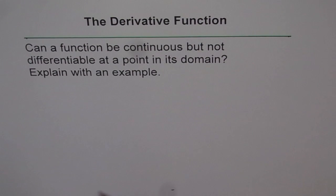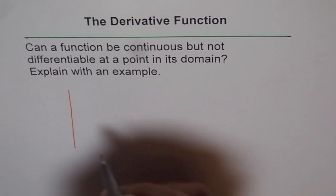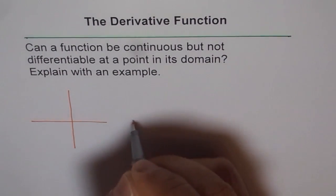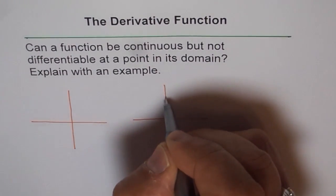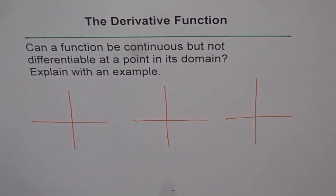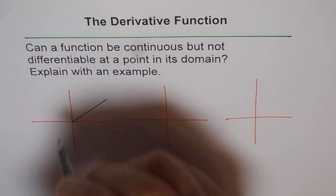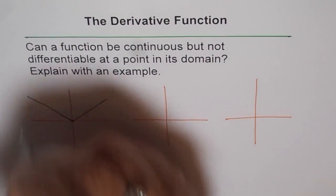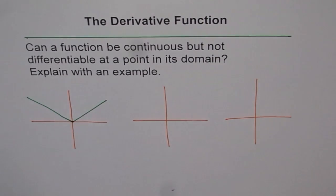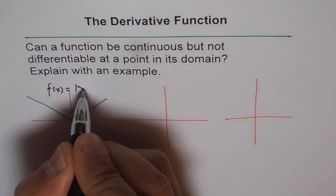Let me give you a few examples where the function is continuous but it may not be differentiable. I'll make a few graphs — let's say three graphs to make this point very clear. So let me draw a continuous function: absolute x, like this. This is my function f of x equals absolute x.